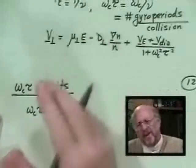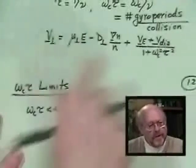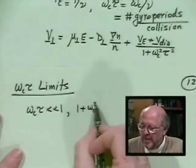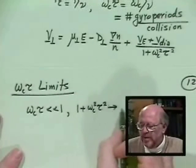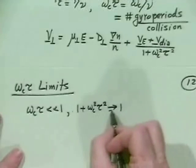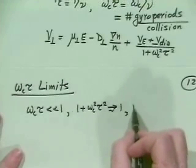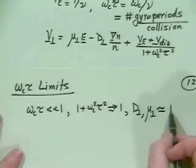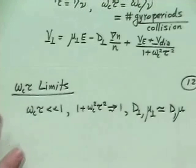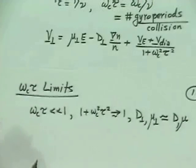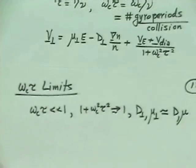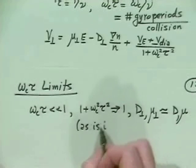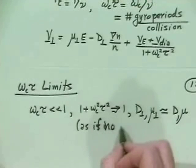In this limit, you wouldn't expect the magnetic field to matter very much, because the particle doesn't complete a whole orbit before a collision. Indeed, one plus omega_c squared tau squared goes to unity, and therefore D_perp and mu_perp revert to their values without the magnetic field. It's effectively as if there's no B field at all.